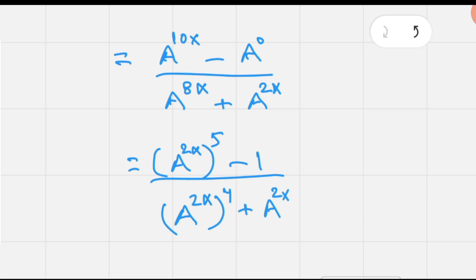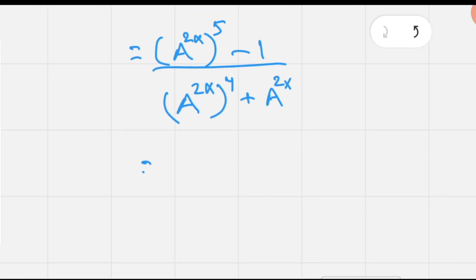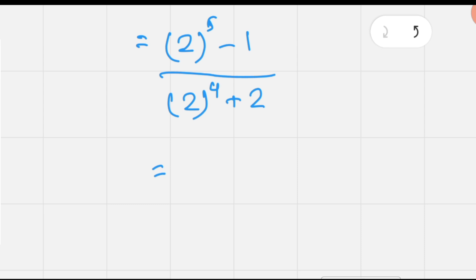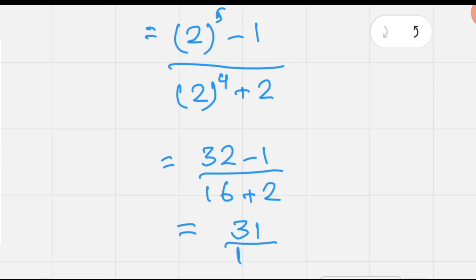Now, inserting the value of A^(2x), that is 2, so we have 2^5 minus 1 over 2^4 plus 2. Since 2^5 is 32, we get 32 minus 1 over 16 plus 2, which equals 31 over 18.